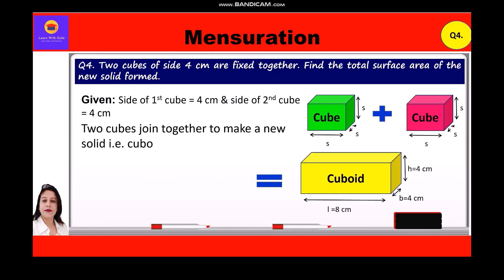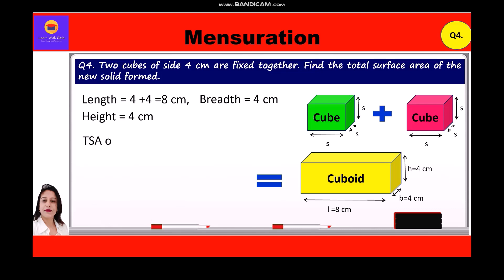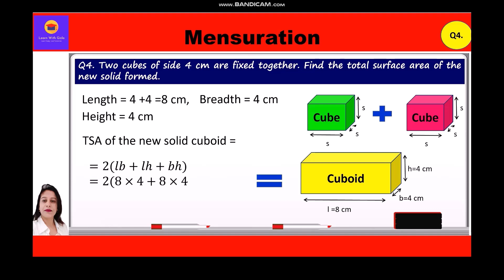The dimensions of the cuboid thus formed are: length = 4 + 4 = 8 cm, breadth = 4 cm, height = 4 cm. Total surface area of the new cuboid = 2(LB + LH + BH) = 2(8×4 + 8×4 + 4×4) = 2(32 + 32 + 16) = 2 × 80 = 160 square centimeters.